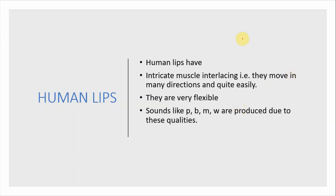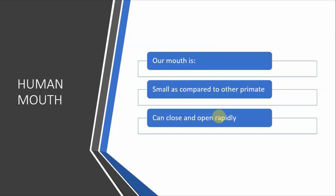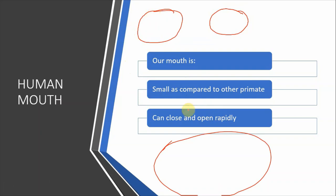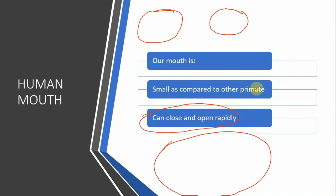Human lips have intricate muscle interlacing, making them very flexible and capable of moving in certain directions easily. This allows complex sounds to be produced like p, b, m, and w. When producing p, b, or m, the upper and lower lips meet together; when producing the w sound, the lips become rounded and meet at the edges. Additionally, our mouth is small compared to other primates like gorillas, and it can be opened and closed rapidly — much more quickly than other primates.